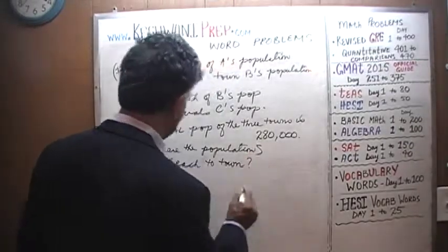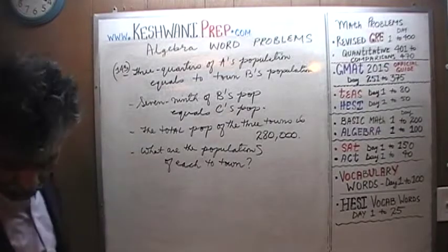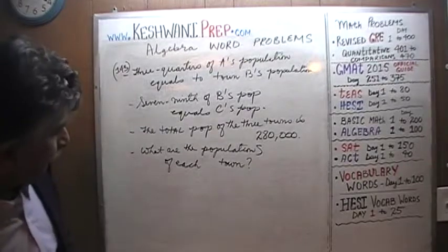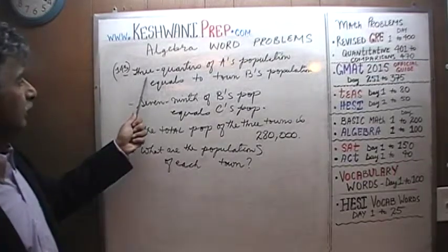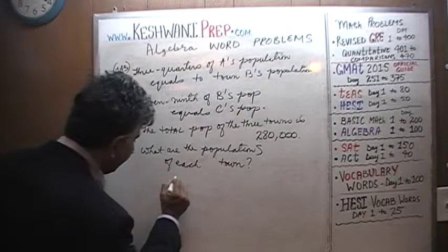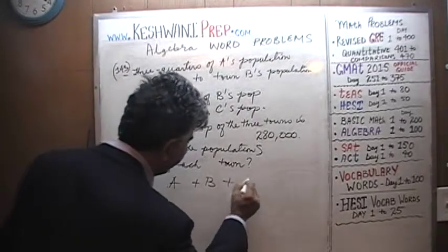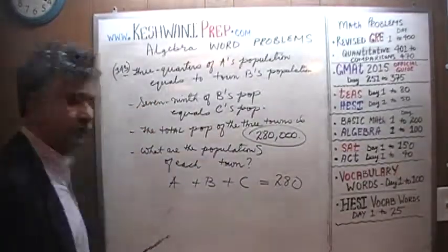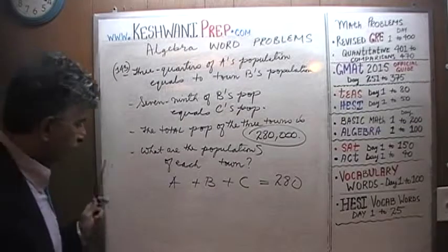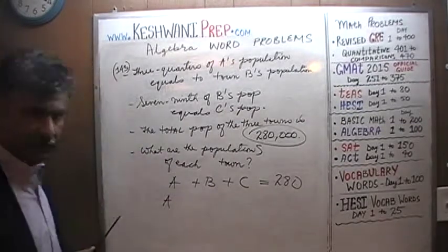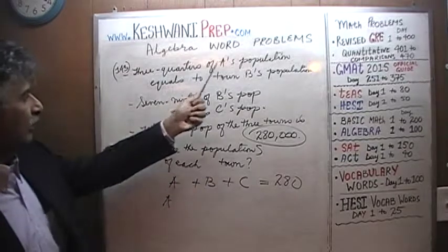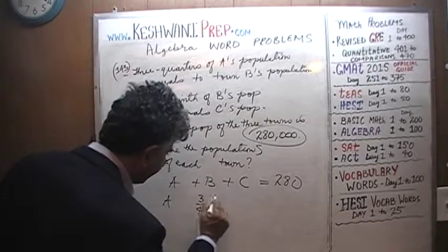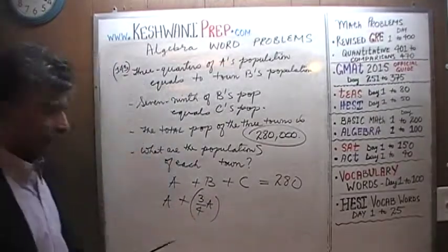Let's find out. We have three towns A, B, and C, and the total population of those three towns is 280,000 — two hundred and eighty thousand. We are just going to work in thousands. Population of A, let's call it just A. Population of B we are told is three quarters of A, so population of B is simply three quarters of A.